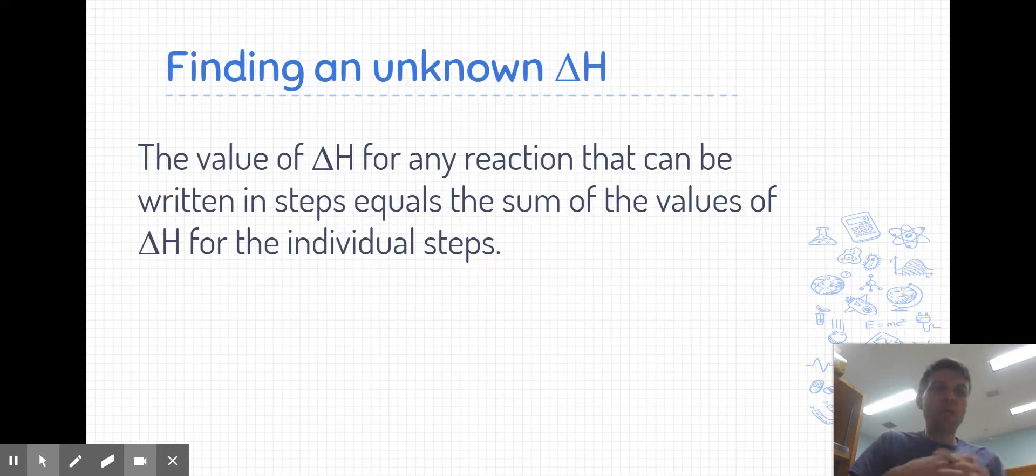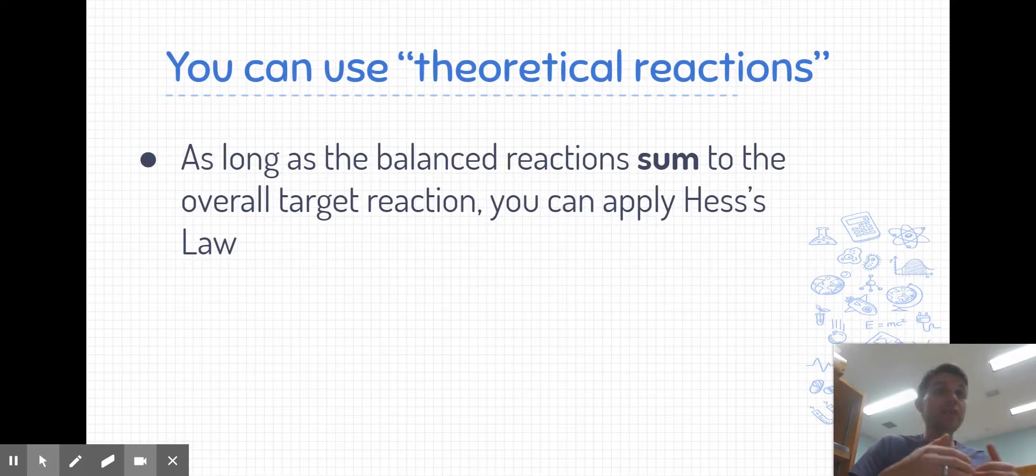So our goal in using Hess's law is ultimately to find an unknown delta H value, an unknown heat of reaction. The value for this unknown heat of reaction is going to be equal to the sum of the heats of reaction for the individual steps. So as long as you can show that the balanced chemical reactions can be summed up to equal the overall target reaction, or my unknown reaction, you can apply Hess's law.